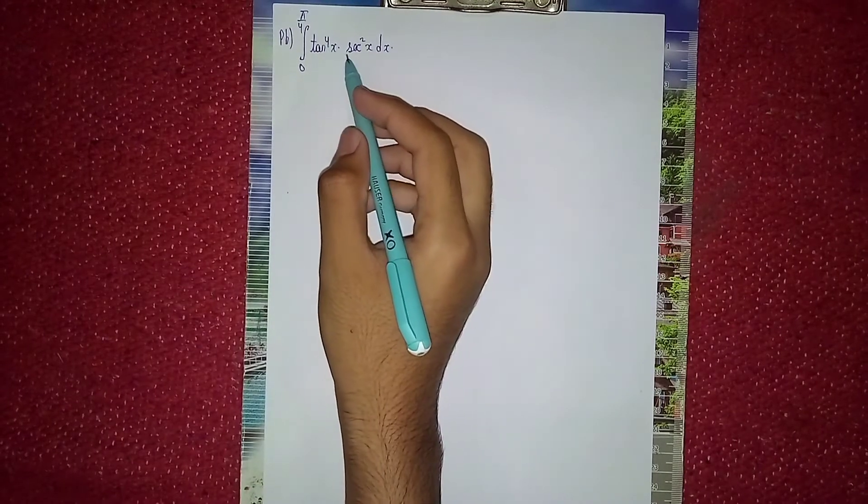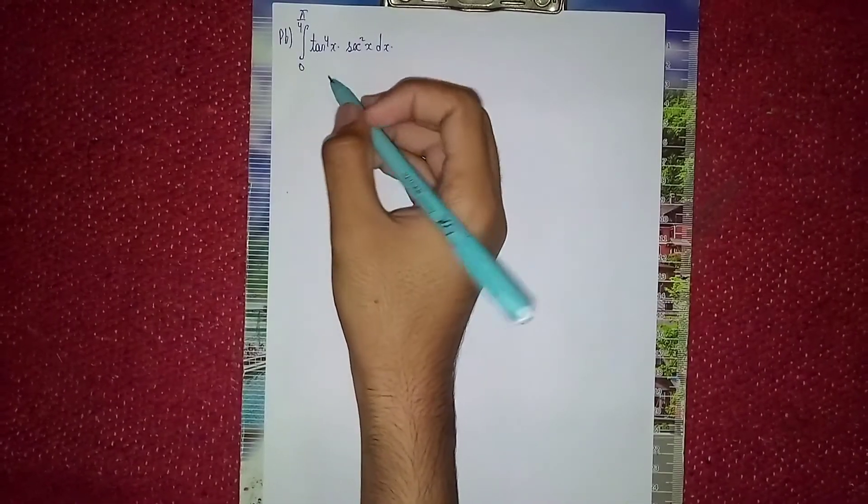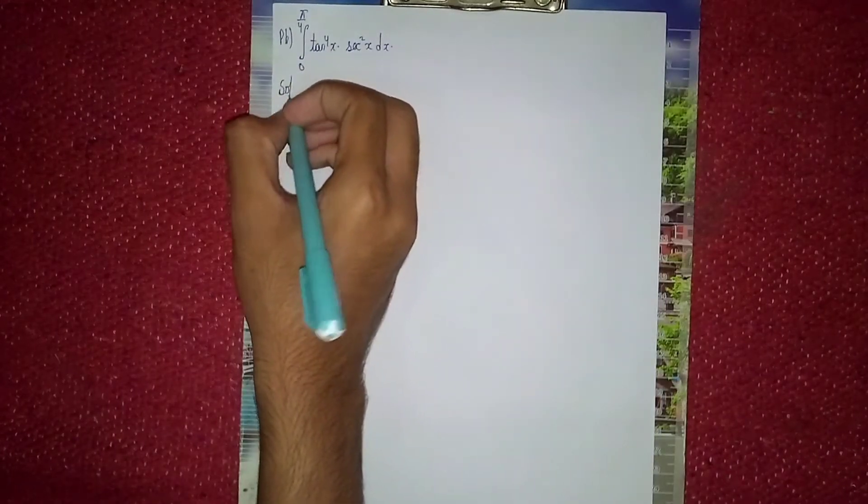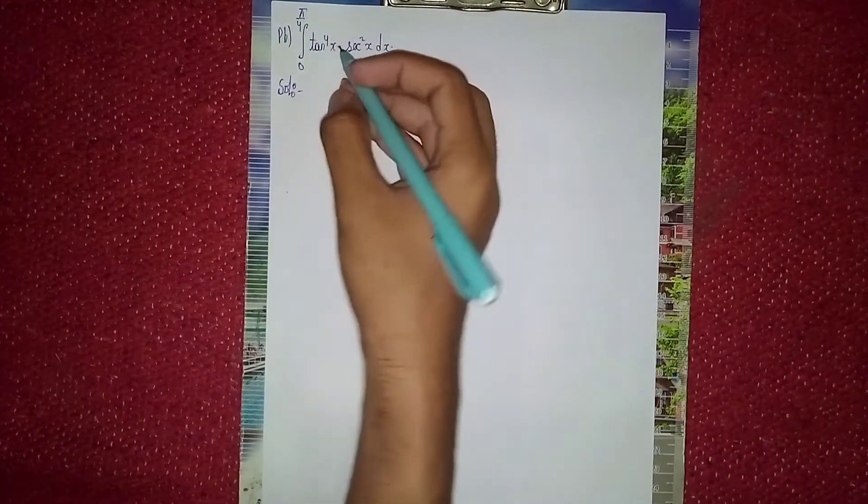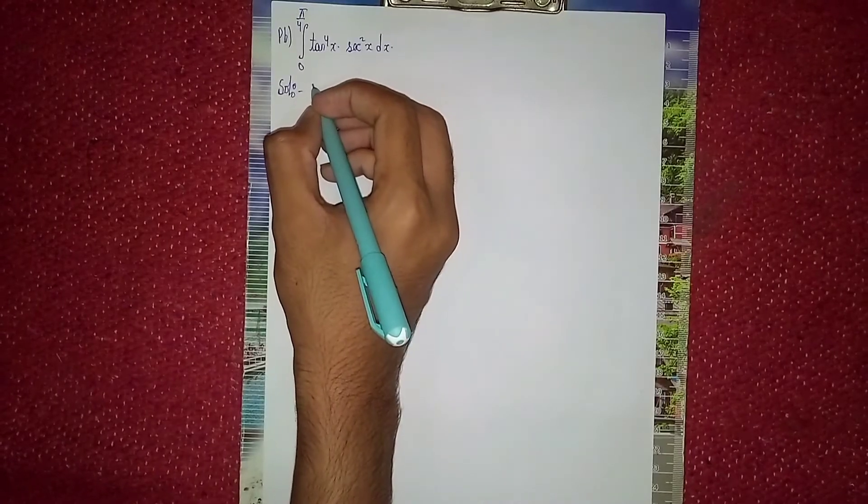Hello everyone, welcome back to my channel. This question is: integrate tan^4(x) sec^2(x) dx with limits π/4 and 0. To integrate, we don't have a direct formula, so we are doing the substitution method.